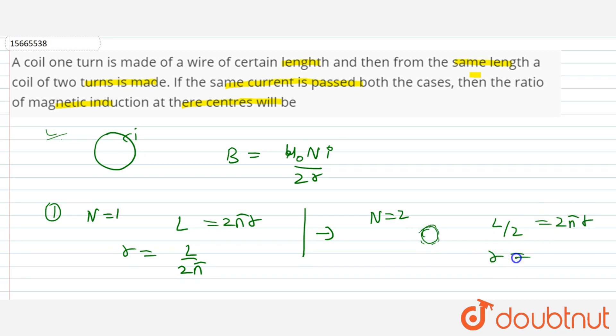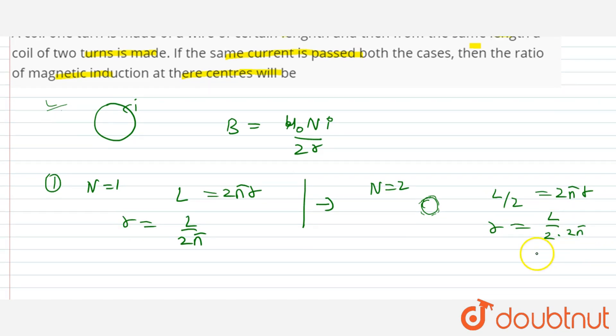So, this is the value of r. This is L upon 4π. L by 2 upon 2π. Basically, this is the new radius. So, r dash is the new radius. That is half of the old one. So, r dash is equal to r by 2. And new number of turns is equal to 2. n dash is 2.